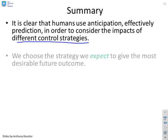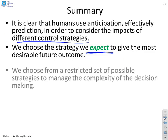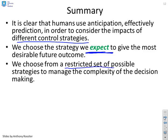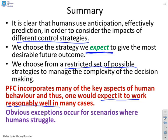In summary, it's clear that humans use anticipation and prediction to consider the impacts of different control strategies. We choose a strategy that we expect to give the most desirable future outcome, and we tend to choose from a restricted set of possible strategies to manage the complexity of decision making. PFC incorporates many of the key aspects of human behavior, and given that human behavior tends to be quite effective, we would expect PFC to work reasonably well in many cases. There are exceptions — human decision making is limited in its efficacy — and similarly there will be cases where PFC also struggles.